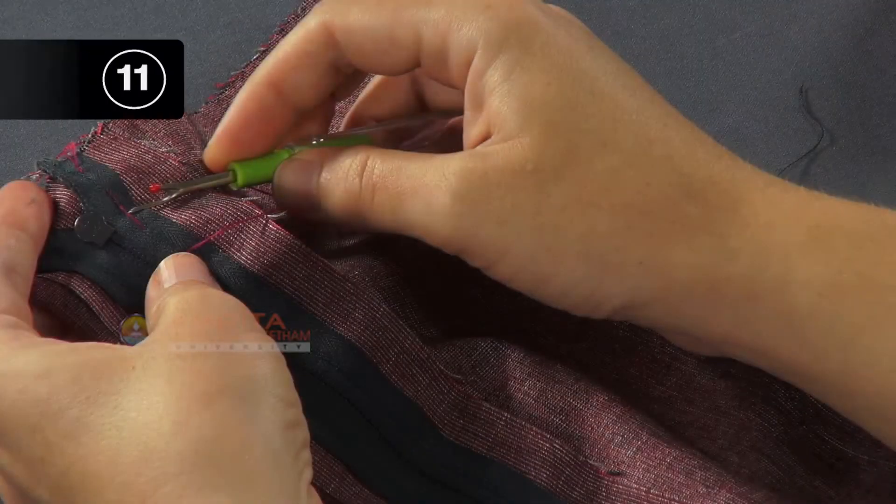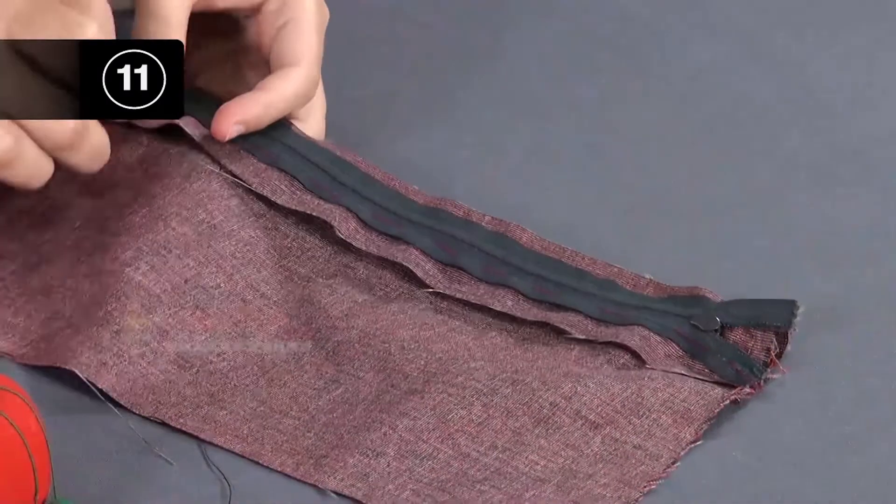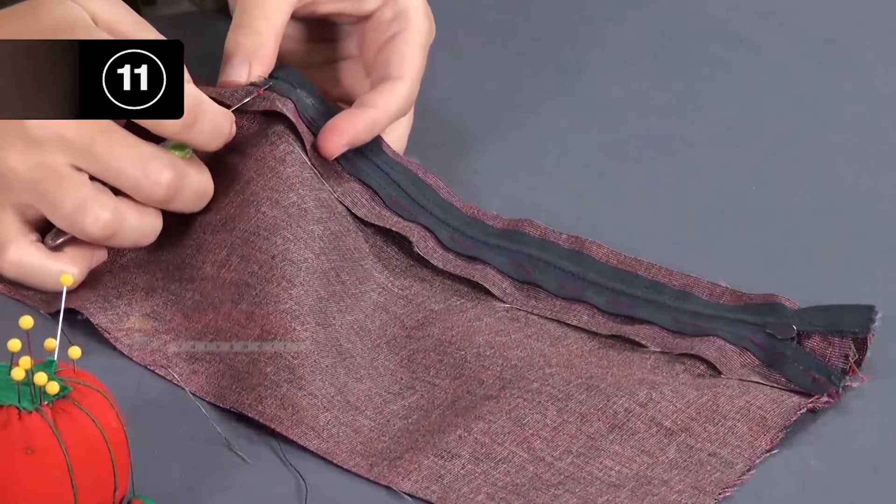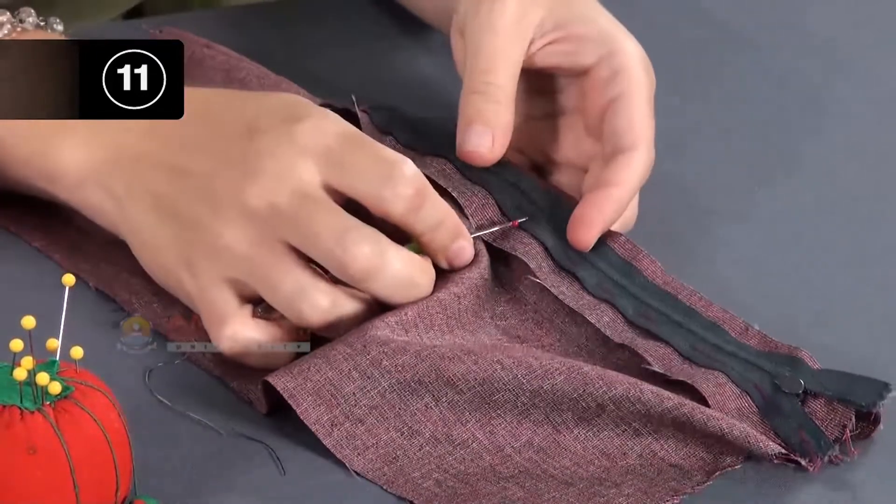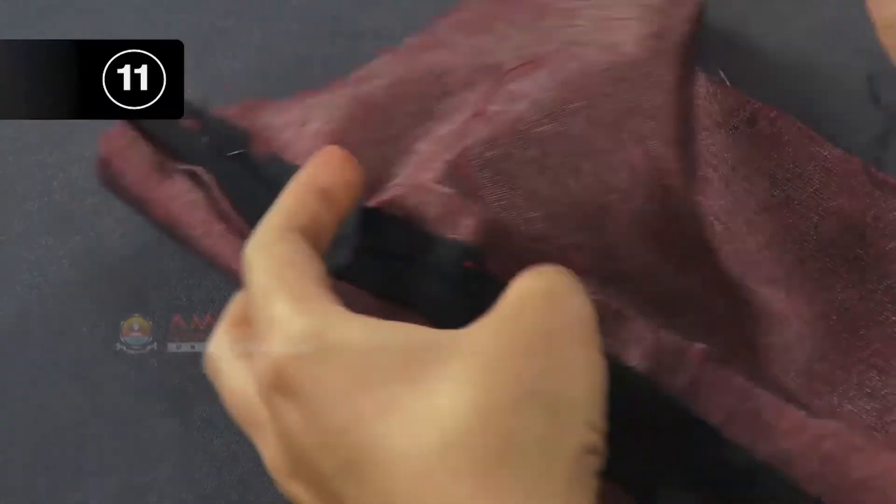Step 11: Remove basting and reveal zipper. Last thing to do is to remove the basting stitches and unpick the large stitches to reveal the zipper.